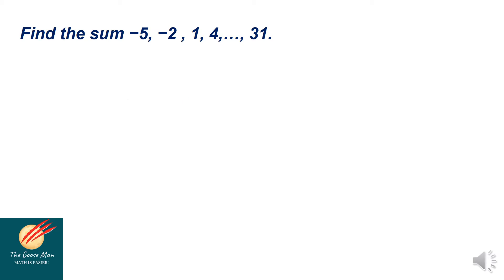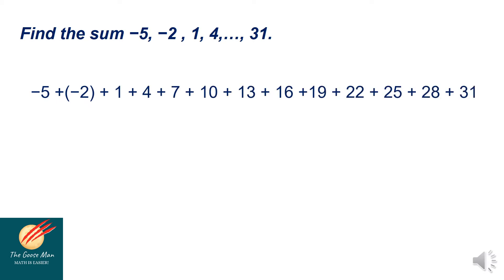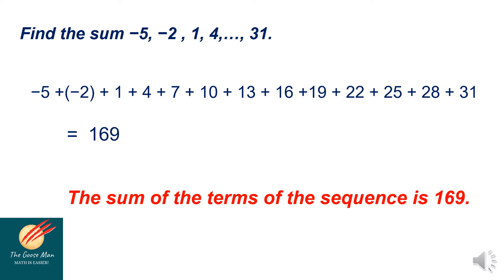Let us move on to the next example: find the sum of negative 5, negative 2, 1, 4, and so on until 31. The common difference is 3, because negative 2 minus negative 5 equals 3. Listing all the terms: −5 + (−2) + 1 + 4 + 7 + 10 + 13 + 16 + 19 + 22 + 25 + 28 + 31. The sum is equal to 169. Therefore, the sum of the terms of the sequence is 169.